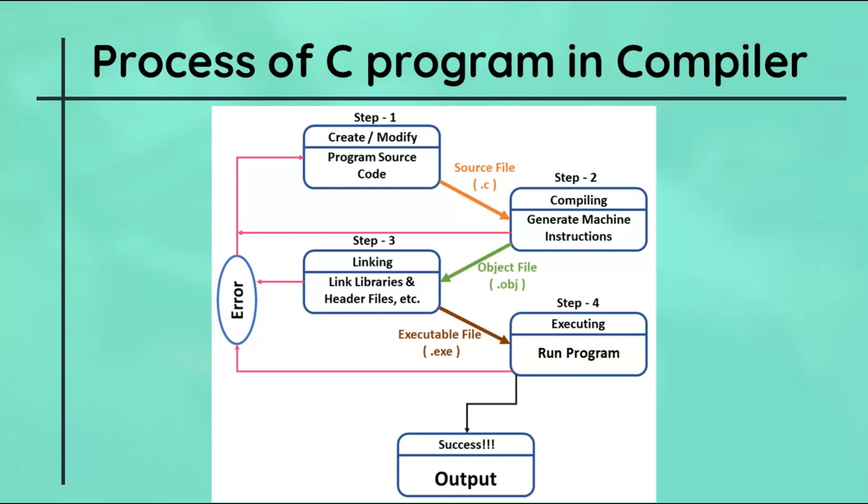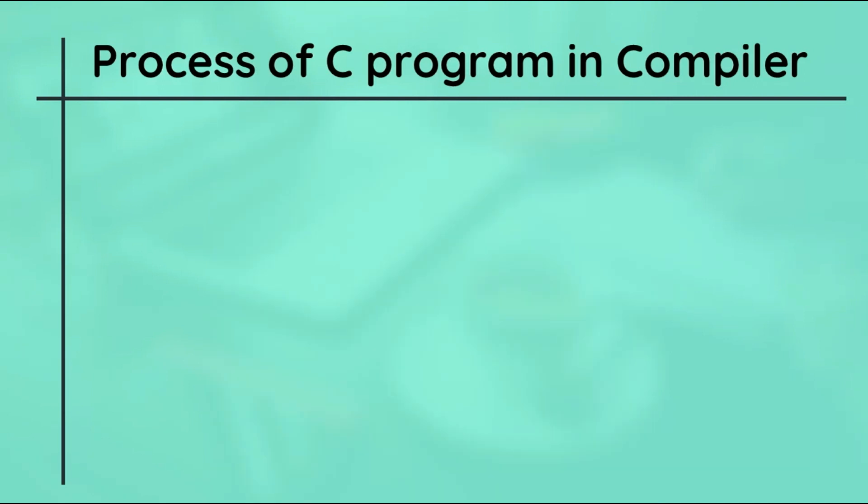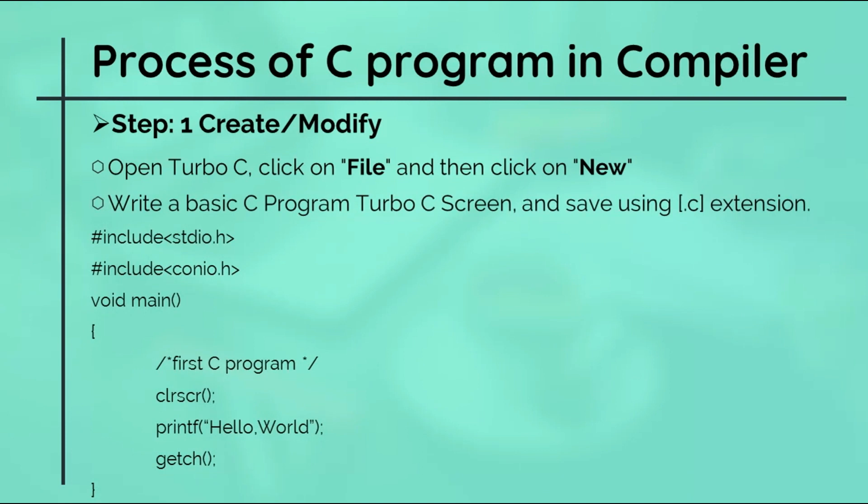So let's take the first one: create and modify. We have already covered in our last video the step to create a C program using Turbo C. For that, open Turbo C, click on File, and then click on New. Create a basic Hello World C program in the Turbo C screen. Save the program using dot C extension. Saving the file with dot C extension is called the source file and sent to the compiler when you command Turbo C to compile the C program.